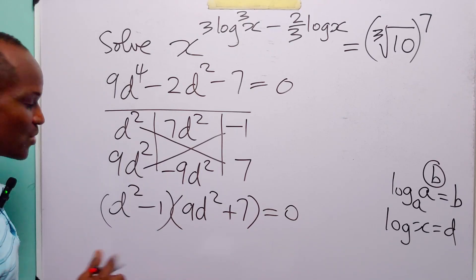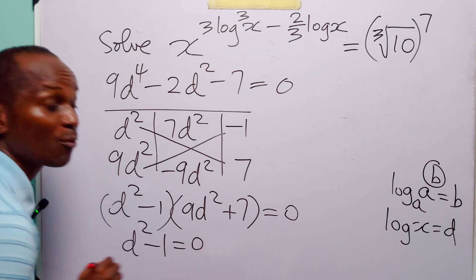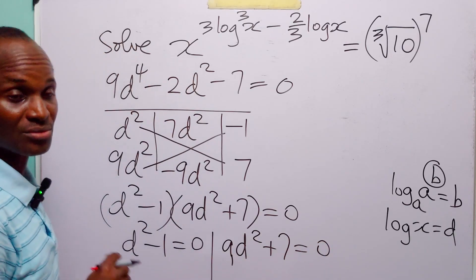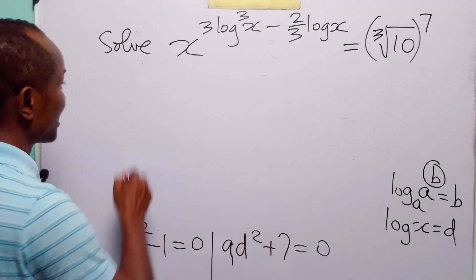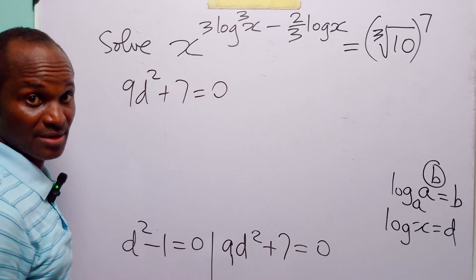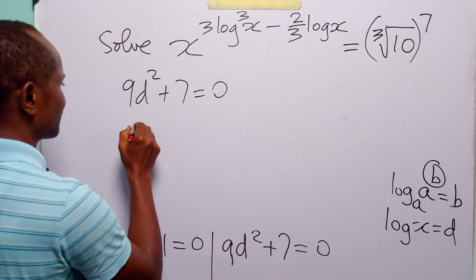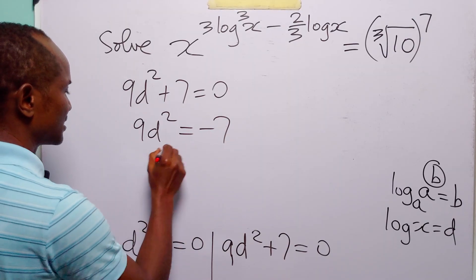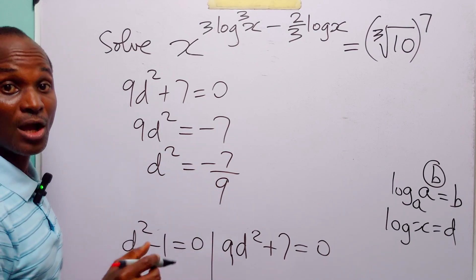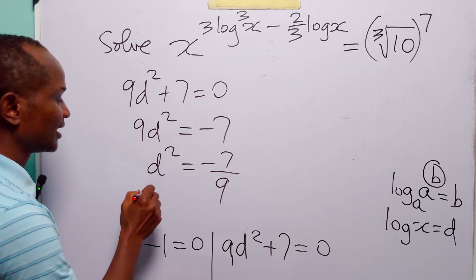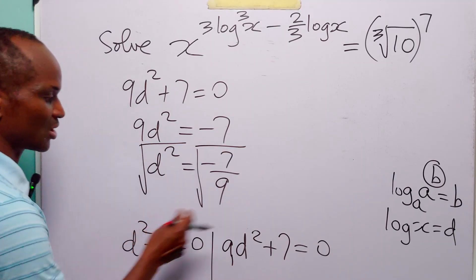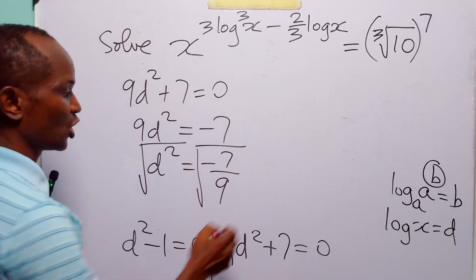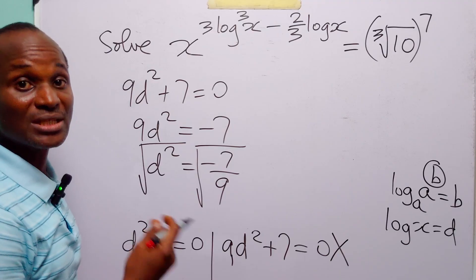From this factored form, we have that either d squared minus 1 equals 0, or 9d squared plus 7 equals 0. Looking at the equation 9d squared plus 7 equals 0: subtracting 7 from both sides gives 9d squared equals minus 7, and dividing by 9 gives d squared equals minus 7 over 9. To find d, we would take the square root of both sides, giving a complex value. Since we are looking for real values of x, this second equation is unacceptable and of no use to us.